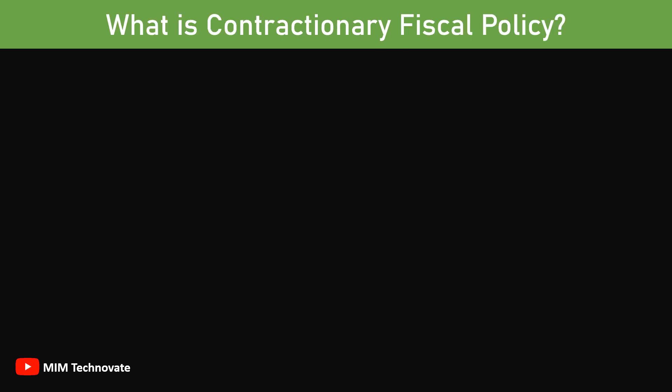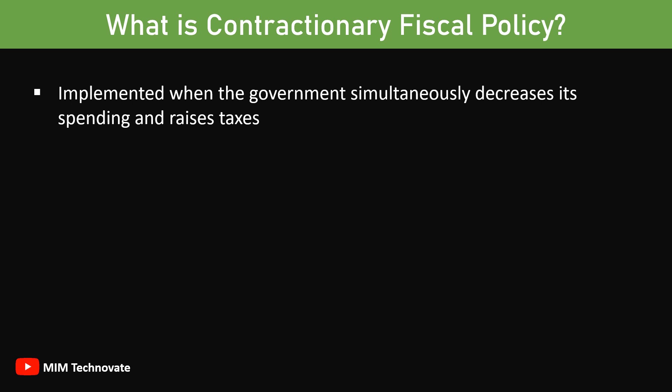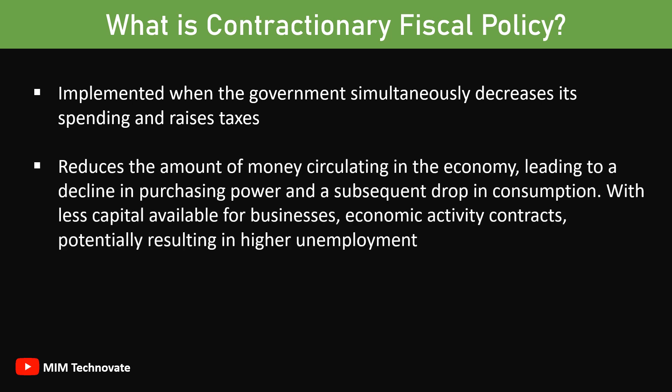What is contractionary fiscal policy? Contractionary fiscal policy is implemented when the government simultaneously decreases its spending and raises taxes. This approach reduces the amount of money circulating in the economy, leading to a decline in purchasing power and a subsequent drop in consumption. With less capital available for businesses, economic activity contracts, potentially resulting in higher unemployment. This policy is primarily used to manage and reduce inflation.